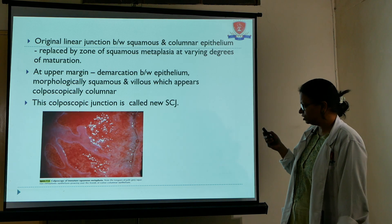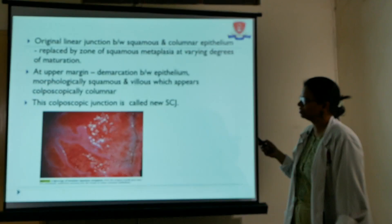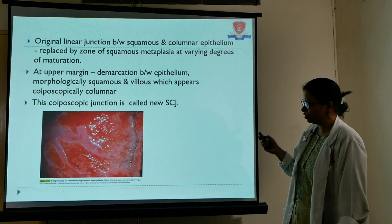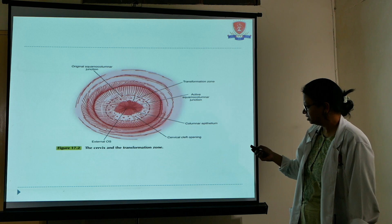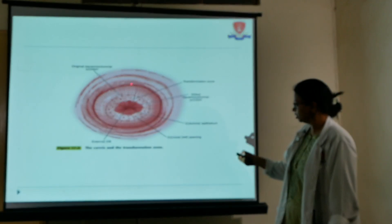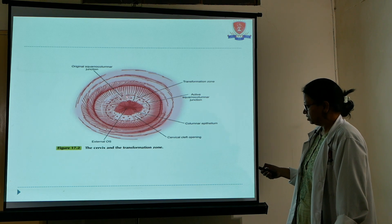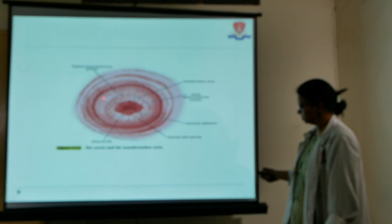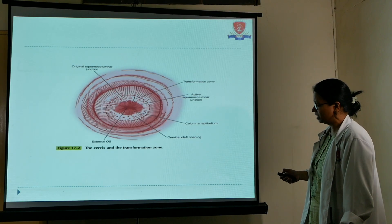This forms a new squamous columnar junction, which is more towards the internal os. The whole area between the old squamous columnar junction and the new squamous columnar junction is known as the transformation zone, and this is where most cervical pre-invasive and cervical cancers arise.